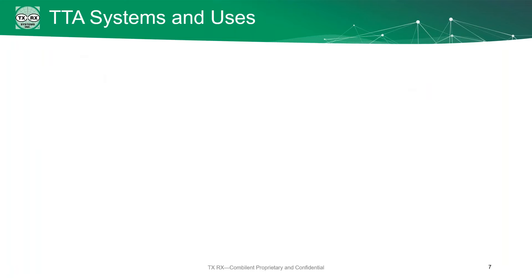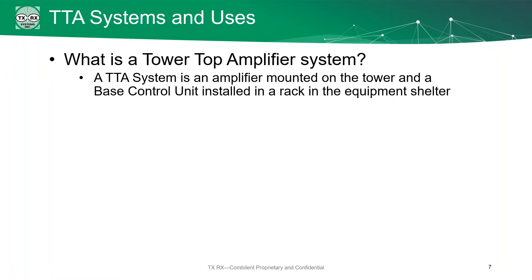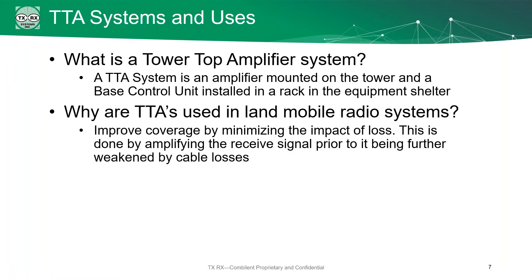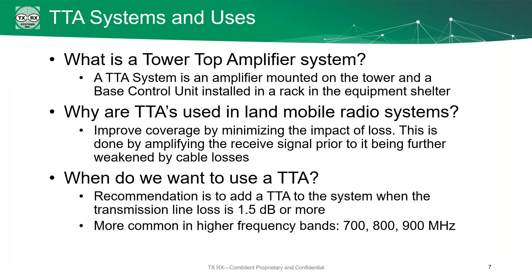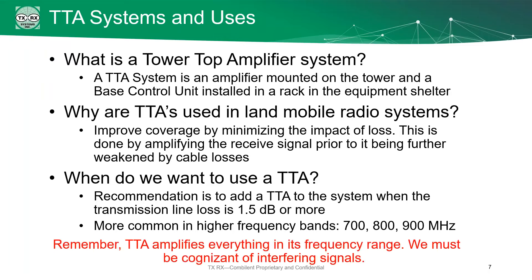What is the tower top amplifier and what are its uses? The tower top amplifier system is an amplifier mounted on top of the tower and a base control unit installed in the rack in the equipment shelter. Together, these two components will improve your coverage by minimizing the impact of loss. This is done by amplifying the signals as they're received at the antenna, prior to being further weakened by all of your cable losses. We recommend that you use a TTA anytime you have a cable loss higher than 1.5 dB, which is pretty common in the 700, 800, and 900 MHz frequencies. It's important to remember, though, the TTA is going to amplify everything within its frequency range, so if there's another signal, we have to be aware of that.